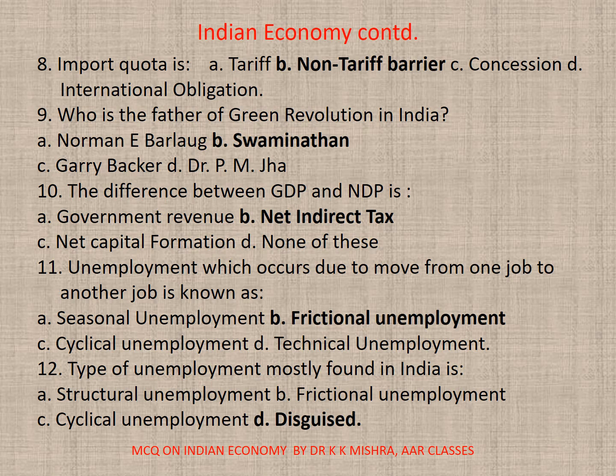Question 9: Who is the father of Green Revolution in India? Correct option is B. Swaminathan. Question 10: The difference between GDP and NDP is — correct option is B. Net Depreciation.